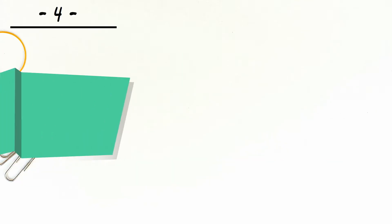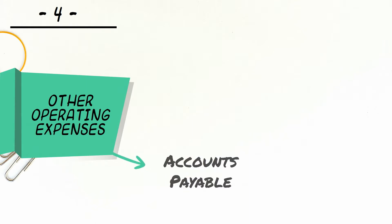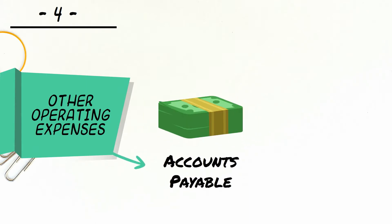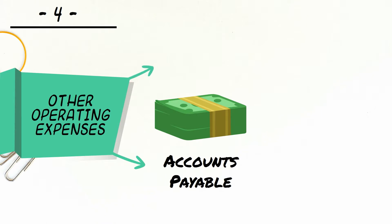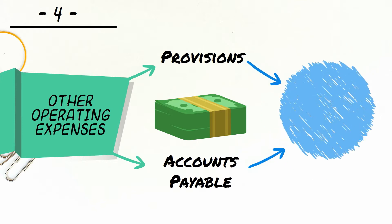Expenses are also incurred on account of selling, distribution and administrative costs. If these payments are paid on a credit basis, they show up in accounts payable. Otherwise the company makes provisions for such payments. Both accounts payable and provisions show up as liabilities in the balance sheet.